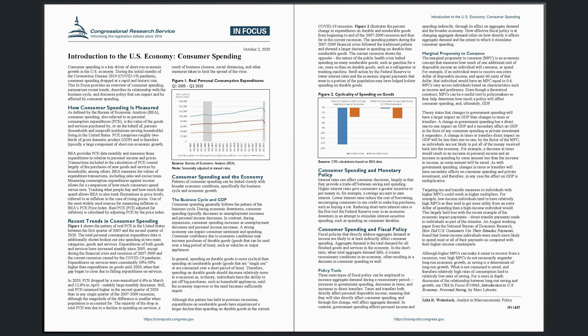BEA provides PCE data monthly and measures these expenditures in relation to personal income and prices. Transactions included in the calculation of PCE consist largely of the purchases of new goods and services by households, among others. BEA measures the values of expenditure transactions, including sales and excise taxes. Measuring consumption expenditures against income allows for a comparison of how much consumers spend versus save. Tracking what people buy and how much they spend allows BEA to also track fluctuations in price levels, referred to as inflation in the case of rising prices. One of the most widely used sources for measuring inflation is BEA's PCE price index.